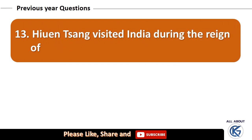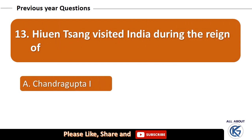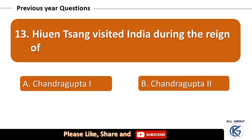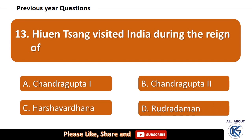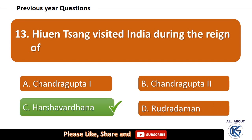Huien Tsang visited India during the reign of: Chandragupta I, Chandragupta II, Harshavardhan, or Rudra Daman? The right answer is Harshavardhan.